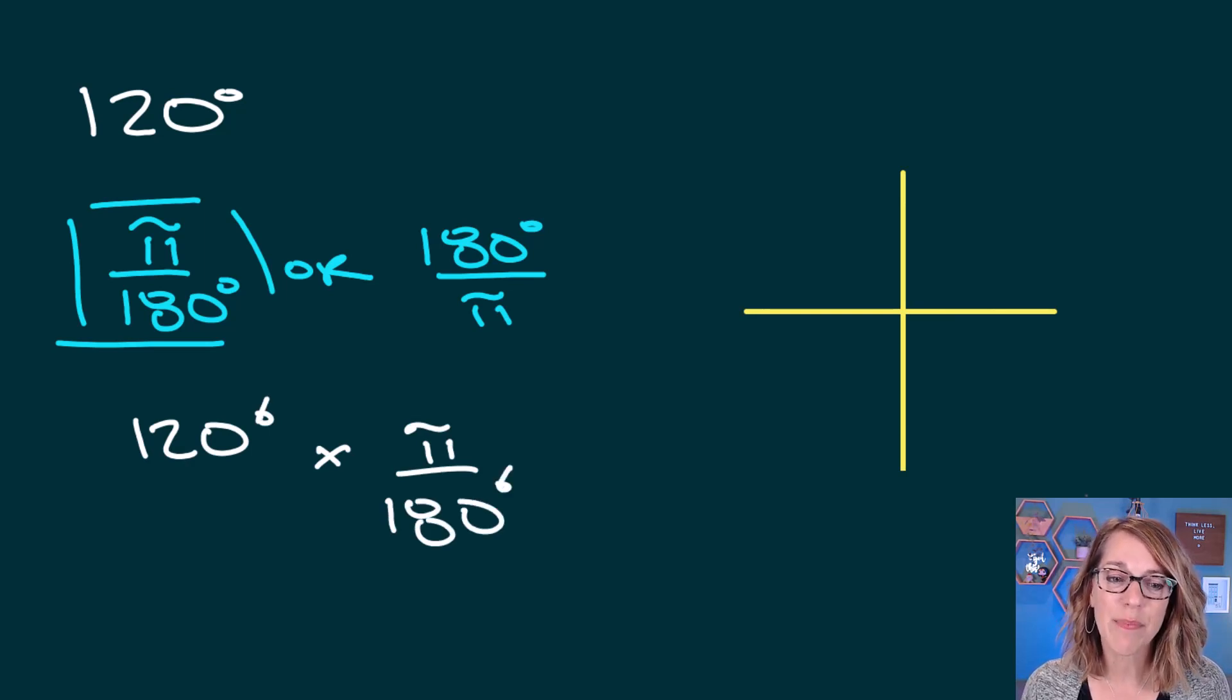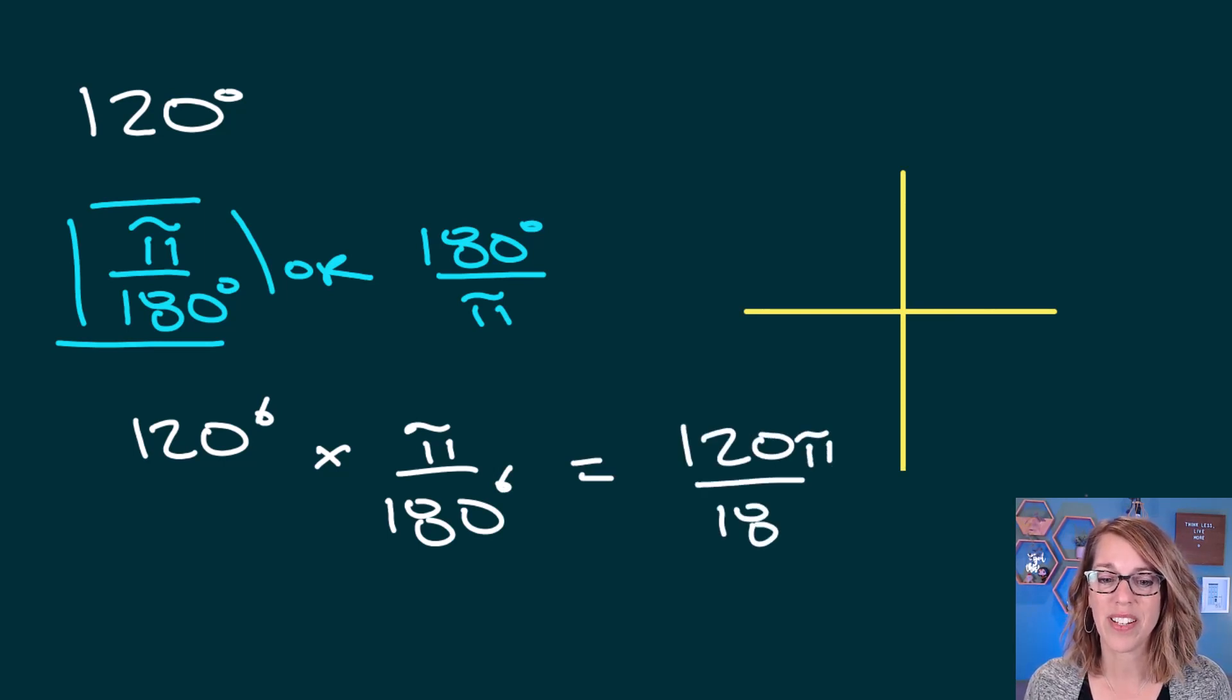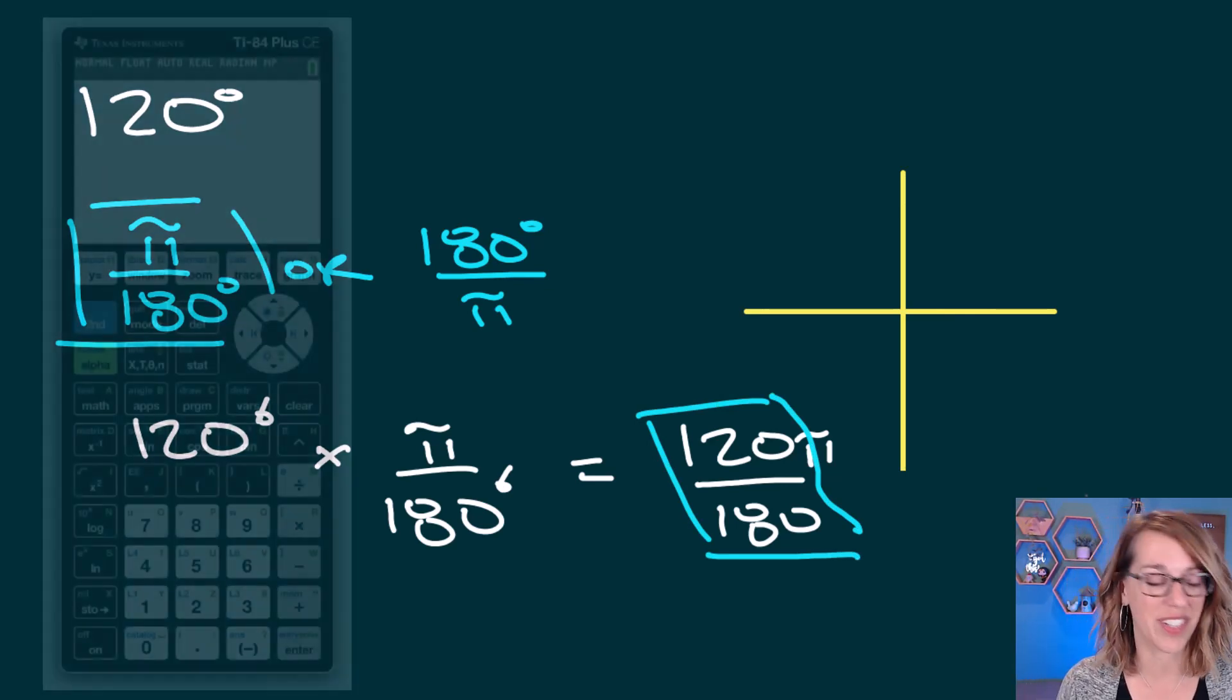So my degrees symbols cancel, and I end up with a lot of reducing that I need to do. But I'm going to go ahead and let the calculator do this work for me. I'm going to grab just the fraction for my calculator, and I'm going to leave the π outside. Let's go ahead and reduce this.